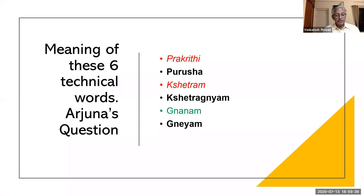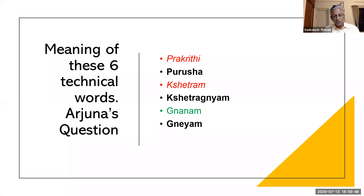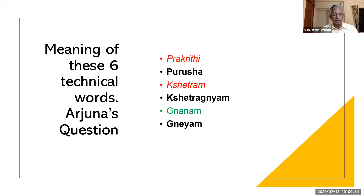The shloka reads: Prakrutim Purusham Chaiva Kshetra Kshetrajna Mevacha Yetat Veditum Ichhami Jnanam Neyam Cha Keshava. The meaning is: O Lord, I desire to know — Yetat Veditum Ichhami — Prakrutim, Purusham, Kshetram, Kshetrajnam, Jnanam and Neyam. Arjuna has introduced six technical terms. These six terms can be grouped into three: Prakrutim and Kshetra represent material universe, Achetana Tattva, so-called Anatma Vichara. Then Kshetrajna, Purusham and Neyam — all three refer to Chaitanyam or consciousness principle, Chetana Tattva, so-called Atma Vichara. And the sixth is Jnanam, meaning knowledge.